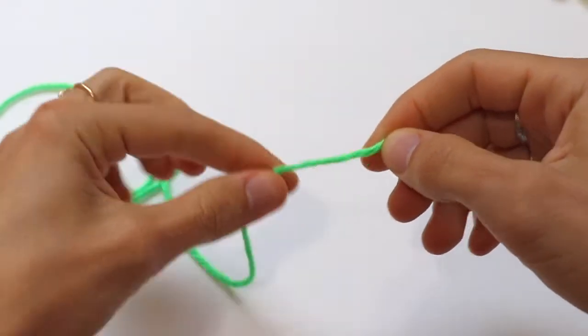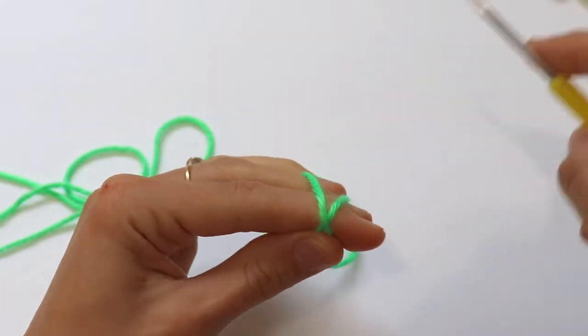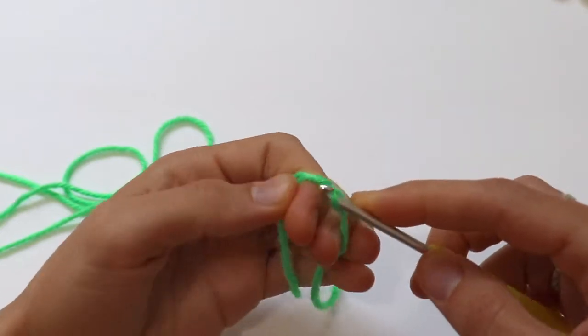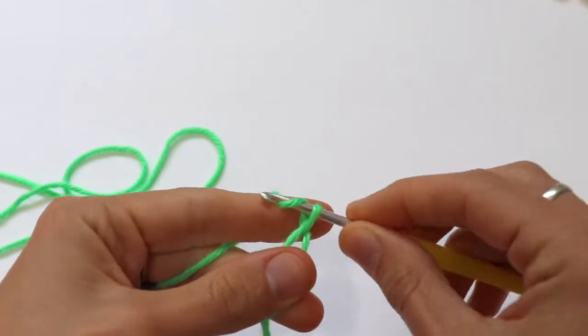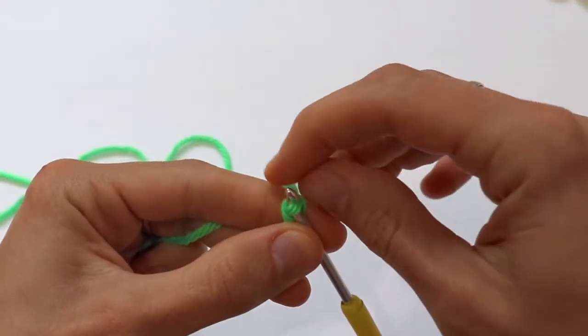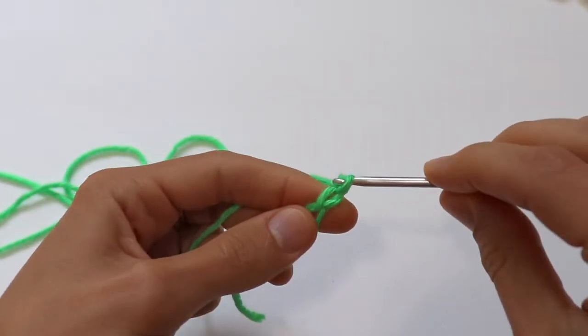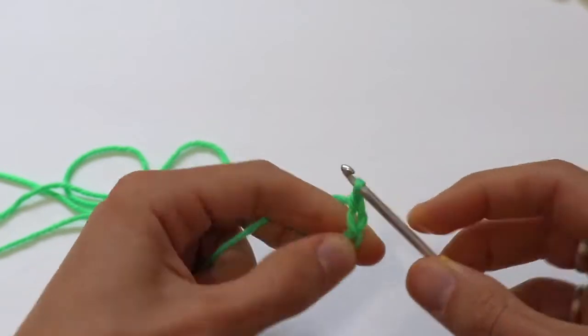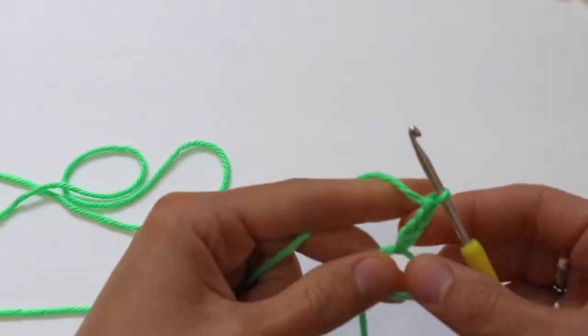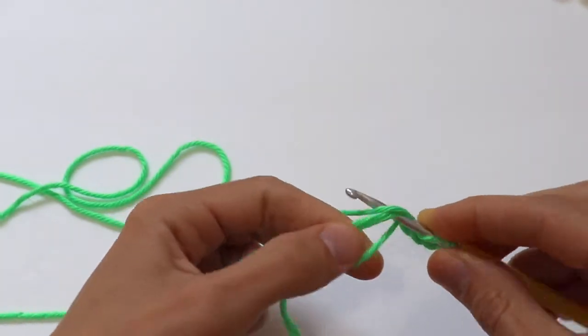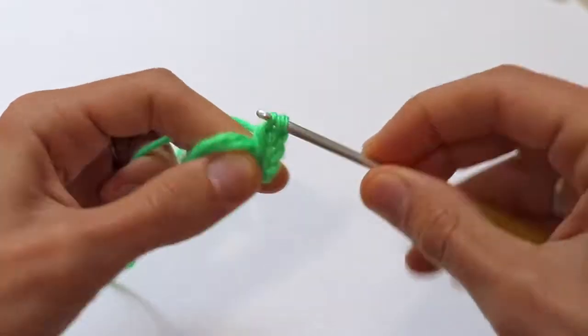Let's make an adjustable ring, so wrap the yarn around your two fingers and make a chain. Now make a chain three and make eight double crochet into the ring.